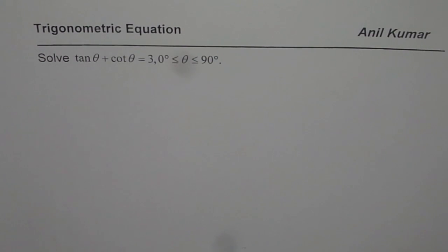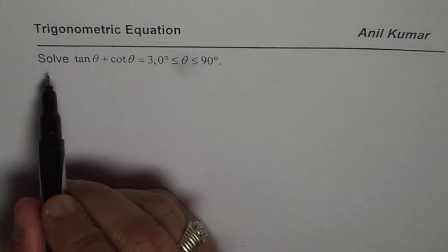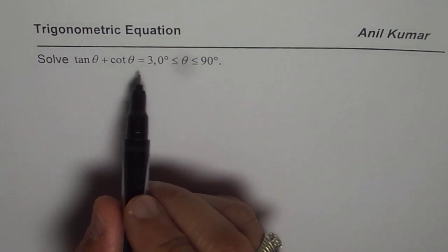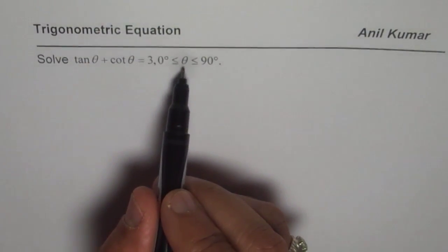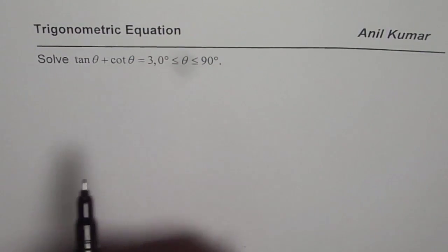I'm Anil Kumar and now let us solve a trigonometric equation in tan and cotangent. The question is: solve tan θ + cot θ = 3 where θ is between 0 to 90 degrees.